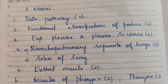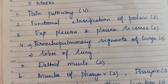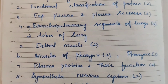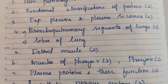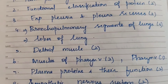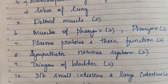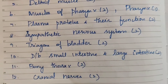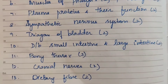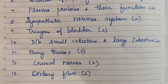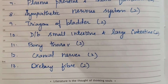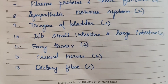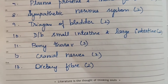Five-mark questions: 1) Pain pathway — 4 times. 2) Functional classification of protein — 2 times. 3) Explain pleura and pleural recesses — 2 times. 4) Bronchopulmonary segments of lungs — 3 times; lobes of lungs also appears. 5) Deltoid muscle — 2 times. 6) Muscles of pharynx — 2 times; pharynx also appears. 7) Plasma proteins and their functions — 2 times. 8) Sympathetic nervous system — 2 times. 9) Trigone of bladder — 2 times. 10) Difference between small intestine and large intestine — 2 times. 11) Bony thorax — 2 times. 12) Cranial nerves — 2 times. 13) Dietary fibers — 2 times.